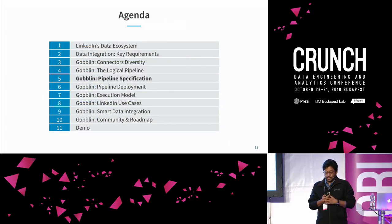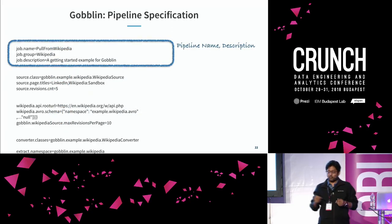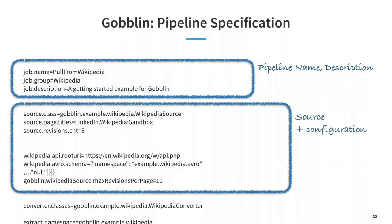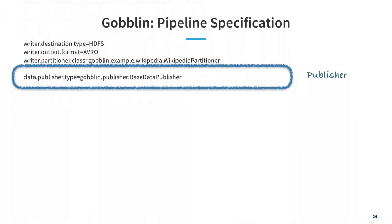Now let's look at how the specification looks. We call it a pull file — it's a property file where you specify basic metadata of the pipeline, then your source and its configuration. For example, the source here is a Wikipedia source. Then you specify converters for whatever conversions you want to perform, and then the writer and its configuration. Here the example writer is a file system writer writing out to HDFS in Avro format. Then a publisher if you want one.